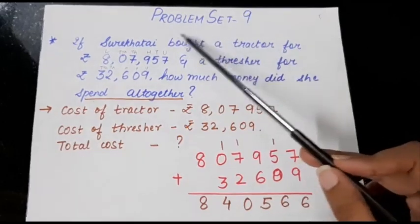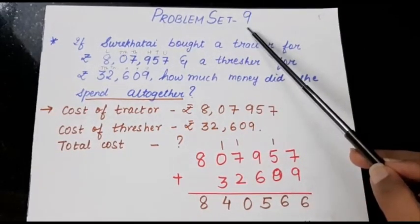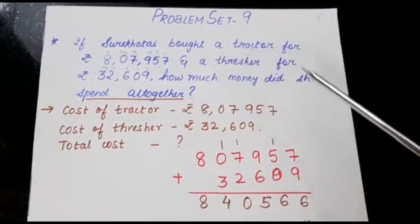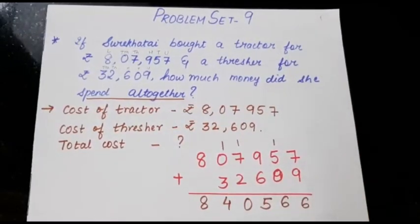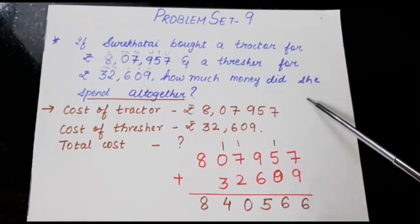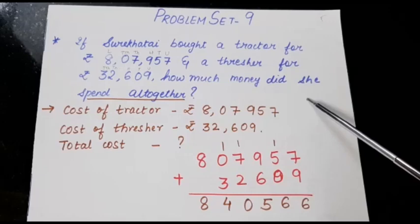So next is problem set 9. Now in problem set it is very important that you read the questions properly so that you come to know whether it is an addition sum or subtraction sum. Now this problem set is only based on addition sums, but when there are sums which are of addition also and subtraction also, that time you need to be able to identify which is an addition sum or which is a subtraction sum.